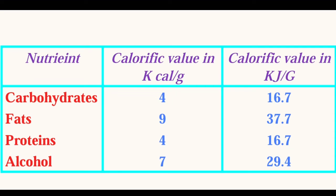As a calorie is a very small quantity, in order to express the energy content of foods we use kilocalories instead. One kilocalorie is equal to 1000 calories. The calorific value of carbohydrates is 4 kilocalories per gram, meaning 1 gram of carbohydrate generates 4 kilocalories. Similarly, fats provide 9 kilocalories per gram and proteins 4 kilocalories per gram. This is also expressed in kilojoules but we are mainly concerned with kilocalories per gram.